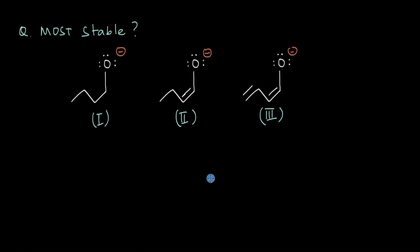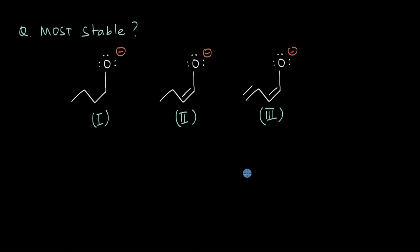In this video we are going to look at how we can use resonance to determine the stability of a given set of molecules. What we have here are three different anions and we need to figure out which amongst these would be the most stable. So how do we do that?